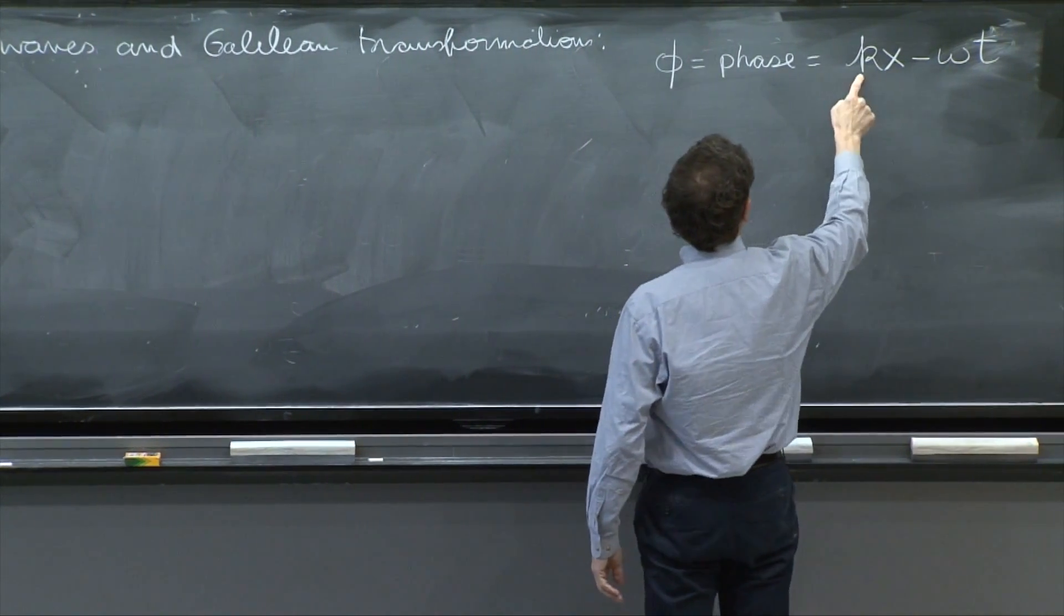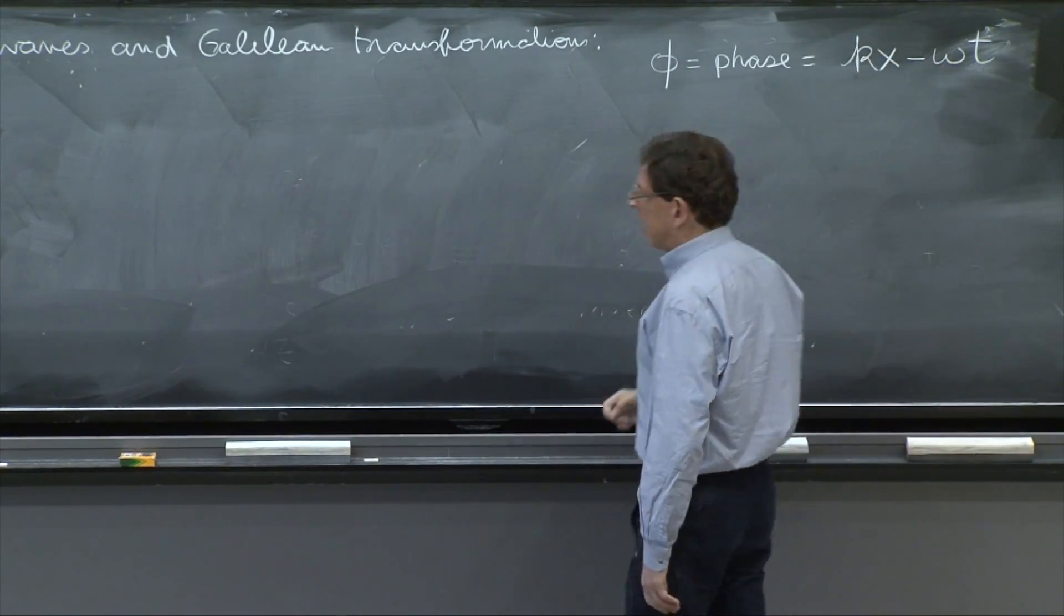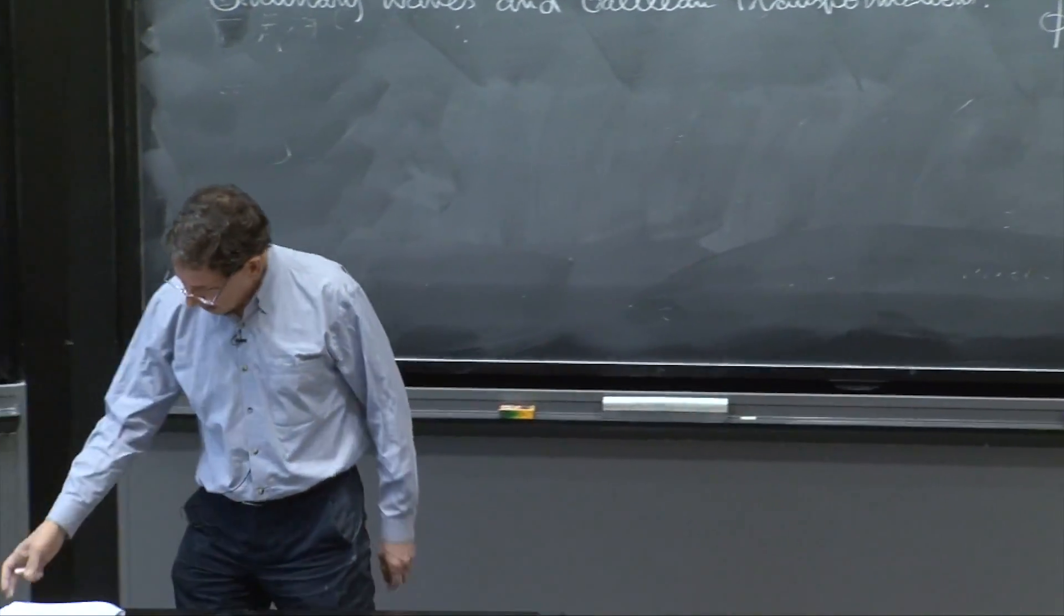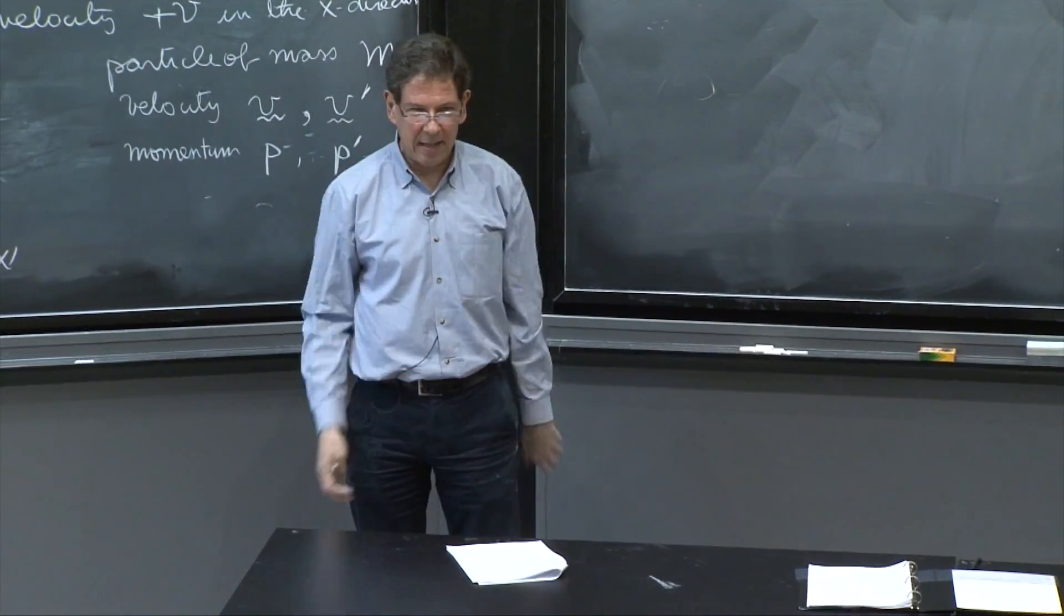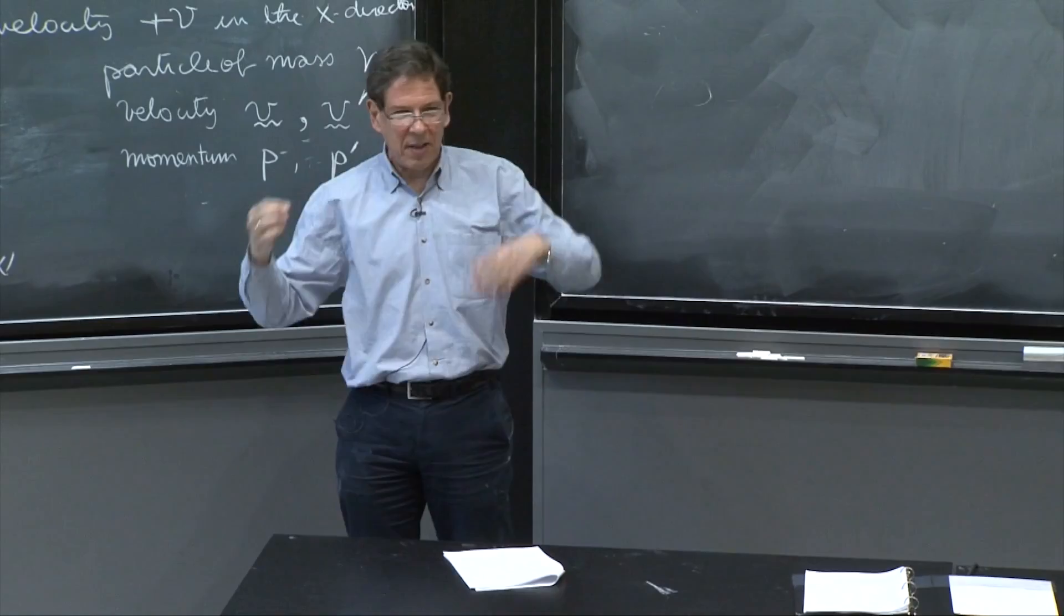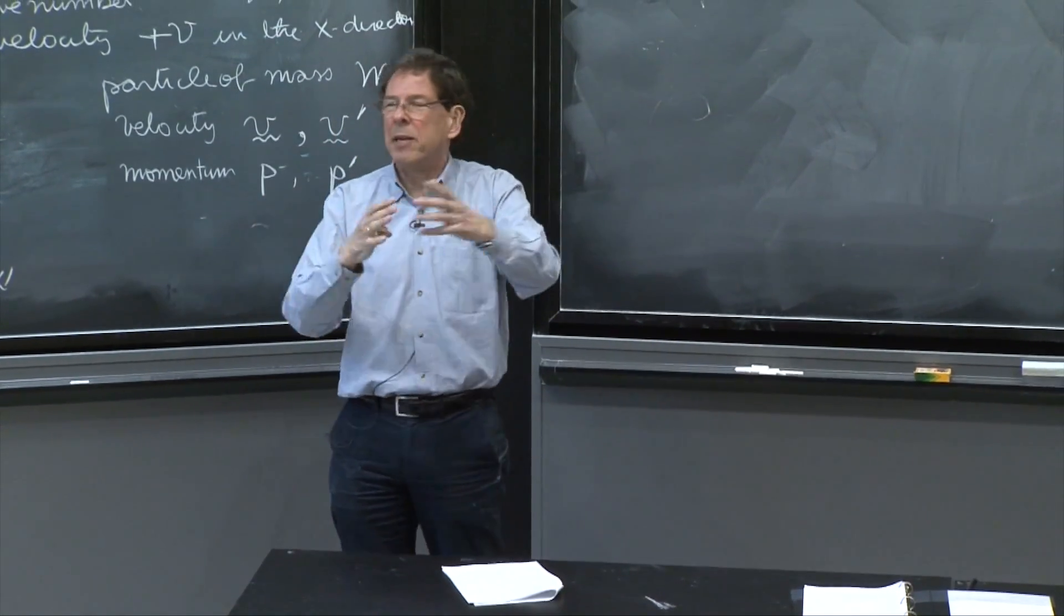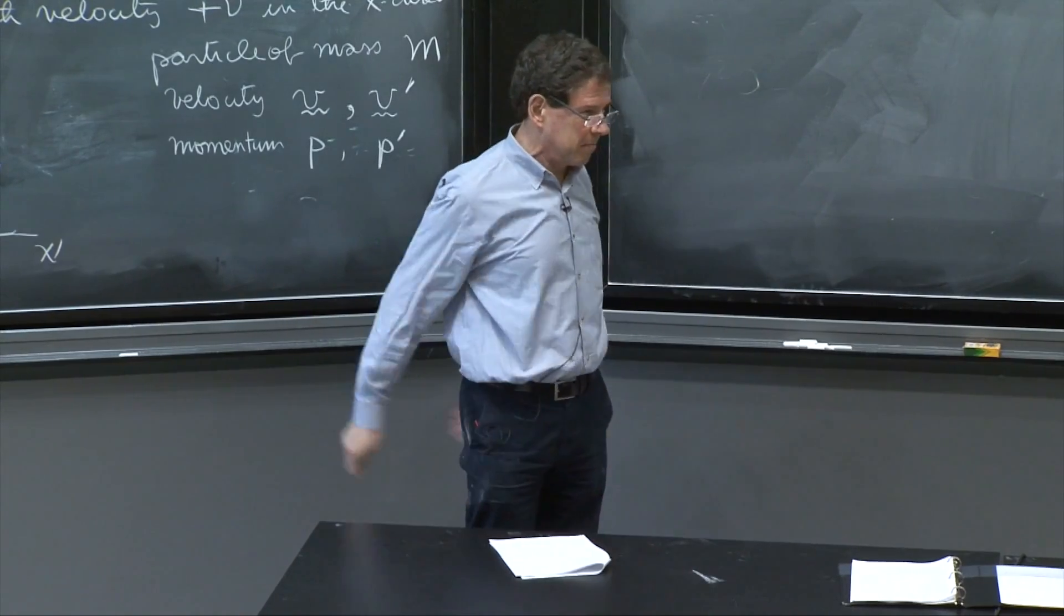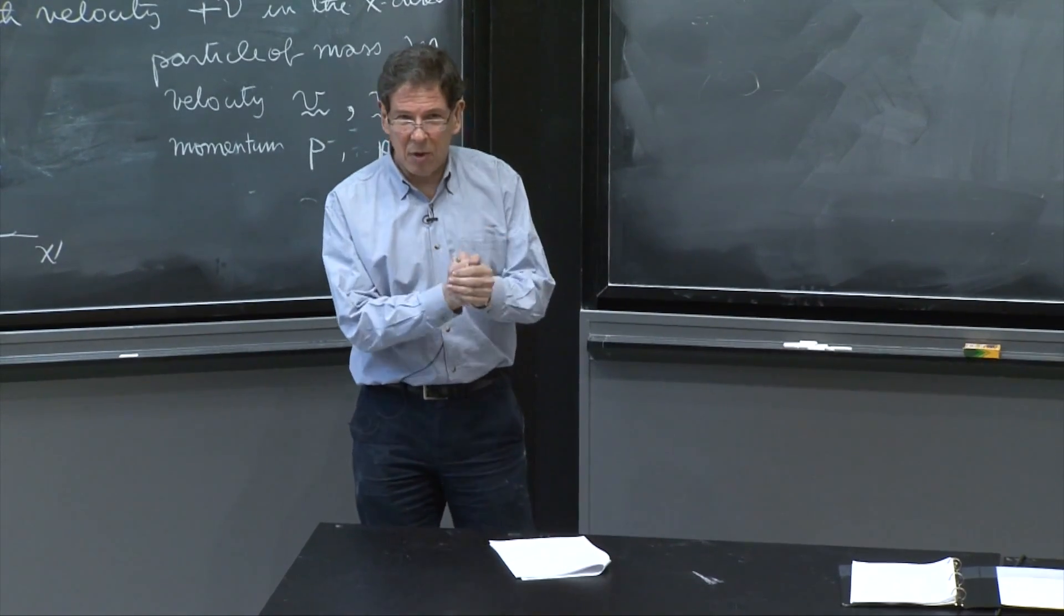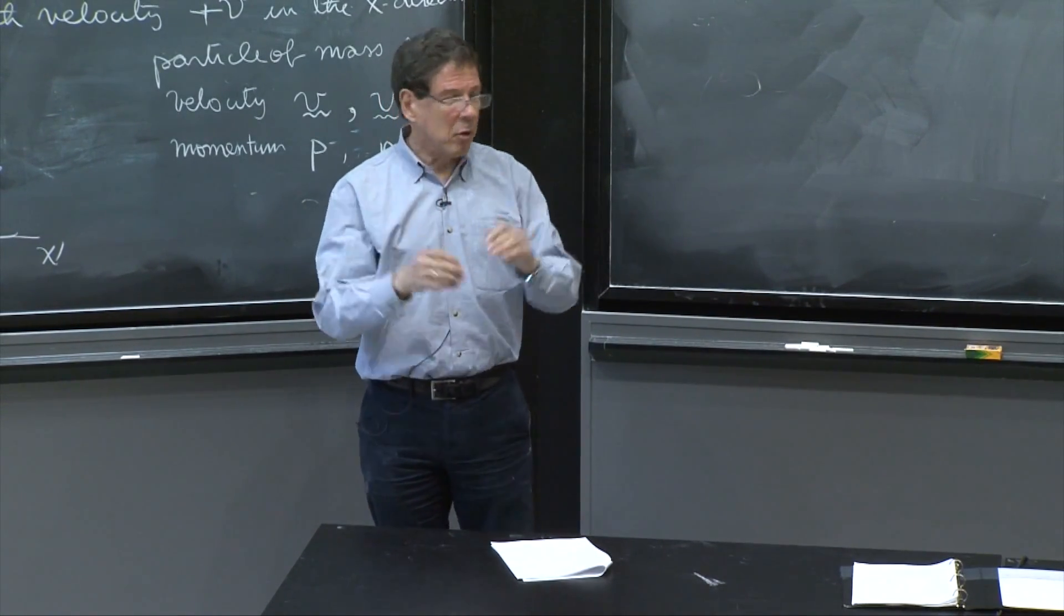K being the wave number, omega being the angular frequency that we spoke about. And the wave may be sine of that phase, or cosine of that phase, or a linear combination of sines and cosines, or e to this wave. Any of those things could be your wave.